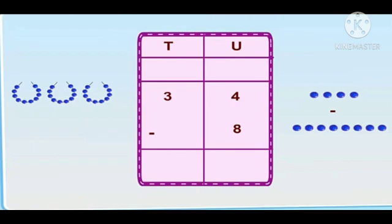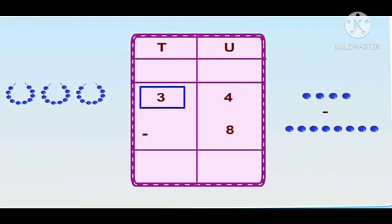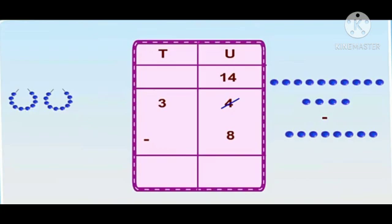Here we have 3 tens and 4 units, and we have to subtract 8 units from 4 units. Now, we cannot subtract 8 from 4. So what do we have to do? We untie one ten from 3 tens, and on the unit side, we add that one ten.